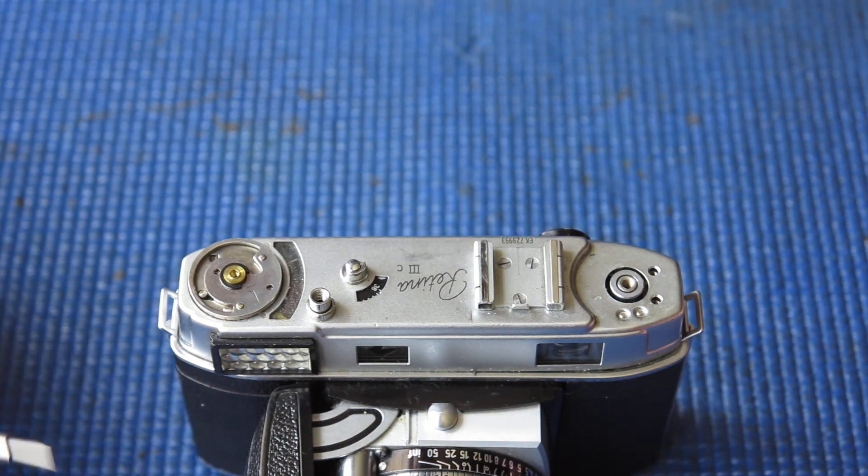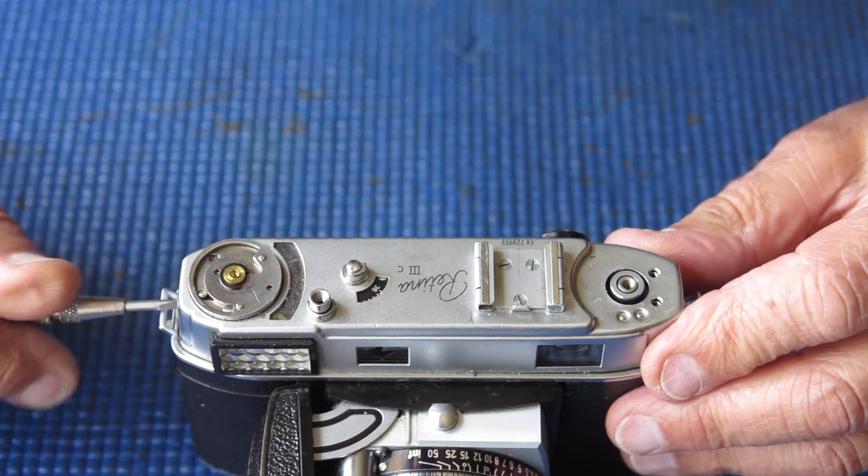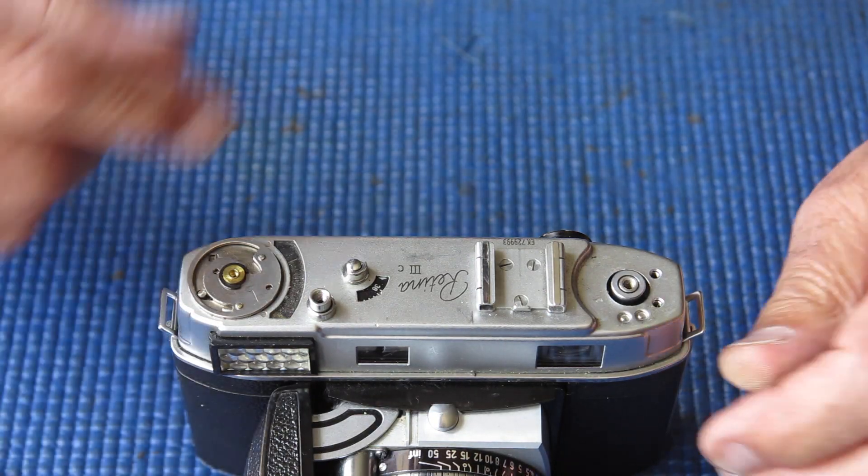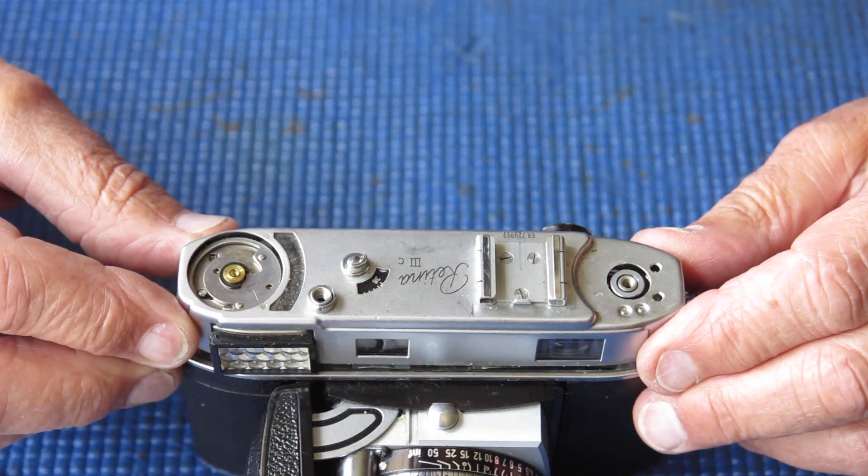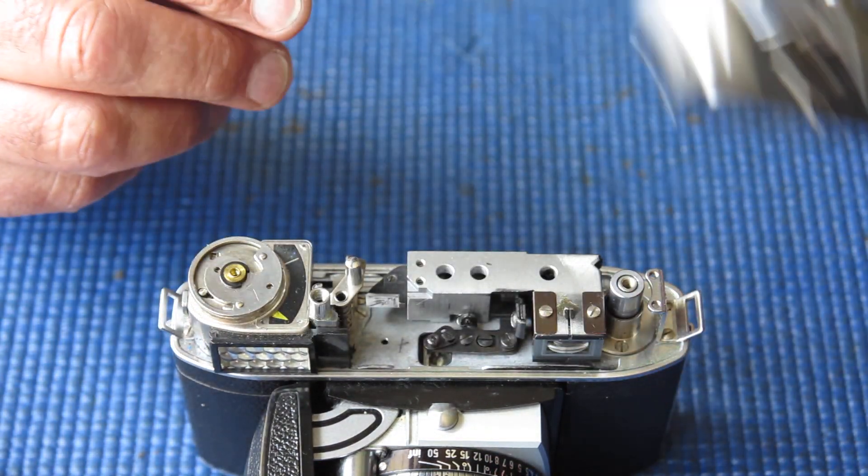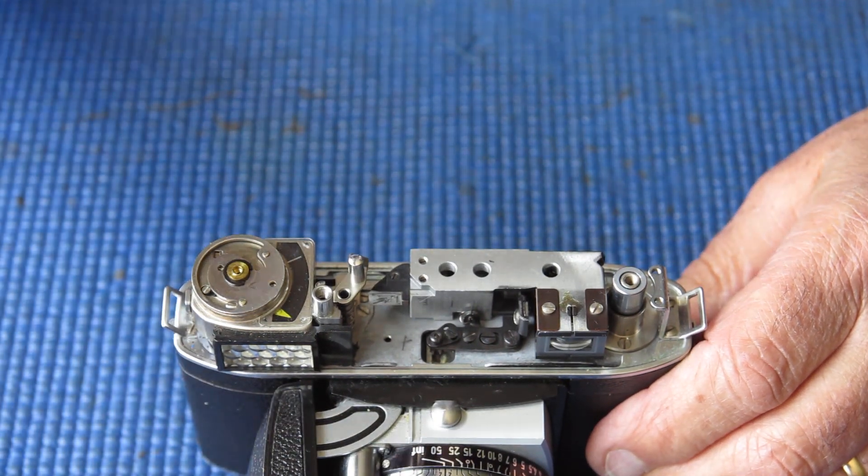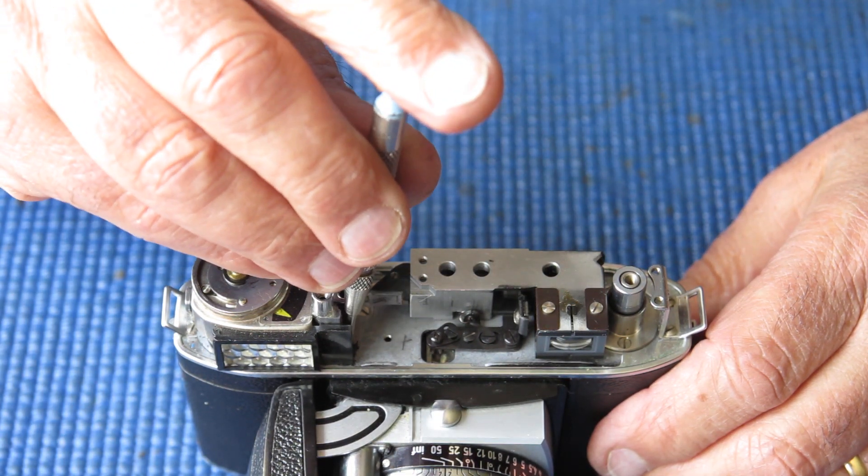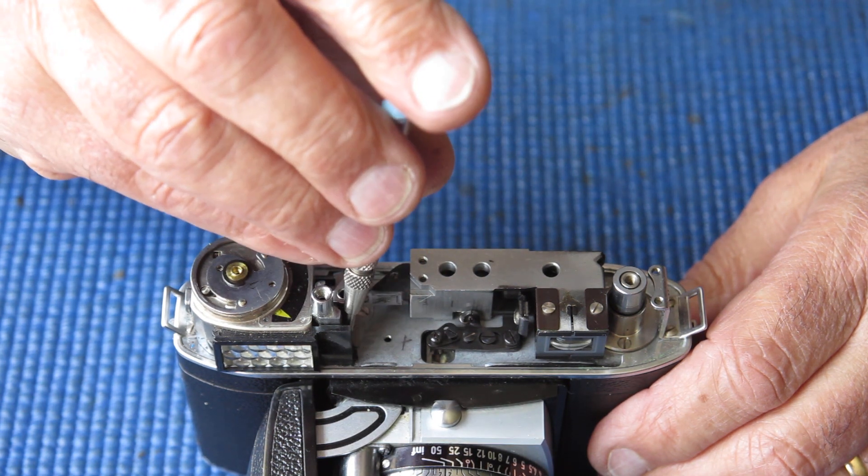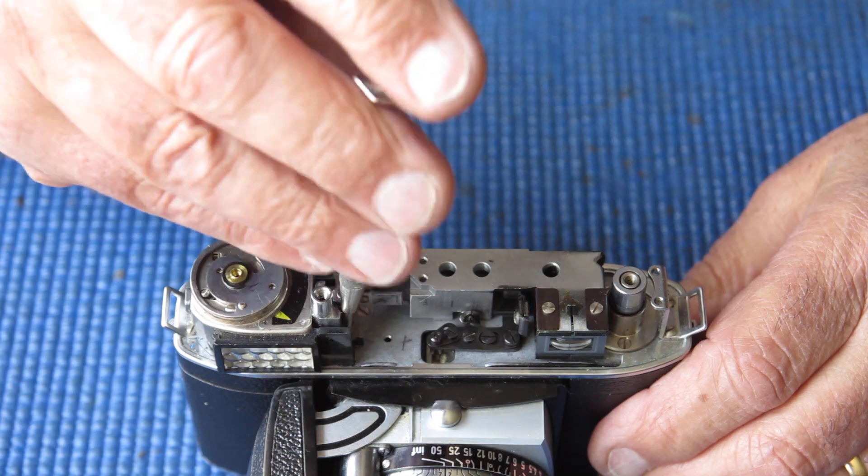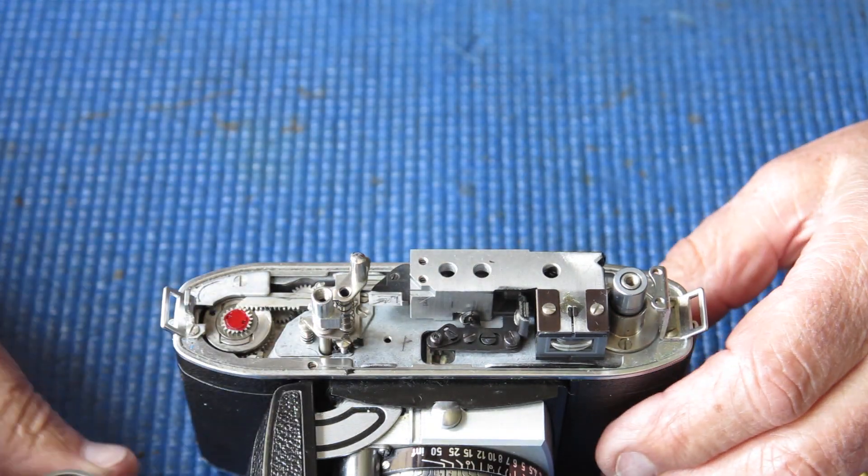When I get a camera with a meter that doesn't function, first thing you do is give the camera a bit of a shake, see if the needle swings at all. Of course it should swing backwards and forwards a little bit. If it doesn't swing backwards and forwards when you move the camera, that's often a sign that the movement is off the pivots, and that happens when cameras get dropped.